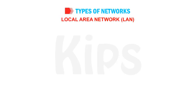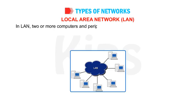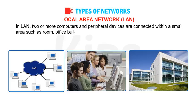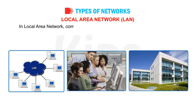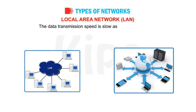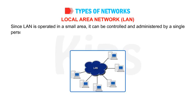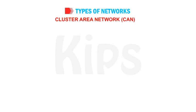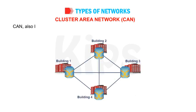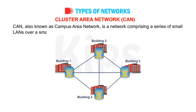Local Area Network (LAN): In LAN, two or more computers and peripheral devices are connected within a small area such as a room or office building. Computer terminals are physically connected with wires. The data transmission speed is slow as compared to WAN. Since LAN is operated in a small area, it can be controlled and administered by a single person or an organization. Cluster Area Network (CAN), also known as Campus Area Network, is a network comprising a series of small LANs over a small geographical area such as a college campus. This network covers an area smaller than MAN.